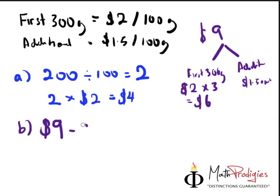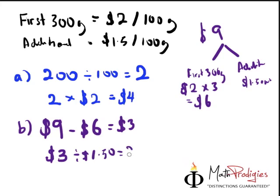So $9 minus $6, that's the minus the first 300 grams is going to cost you $3. So if you have $3 left, and each 100 grams is $1.50, you just divide it by $1.50, and you're going to find yourself that you have two sets. Two sets of, that means 200 grams, two sets of 100 grams. Therefore,